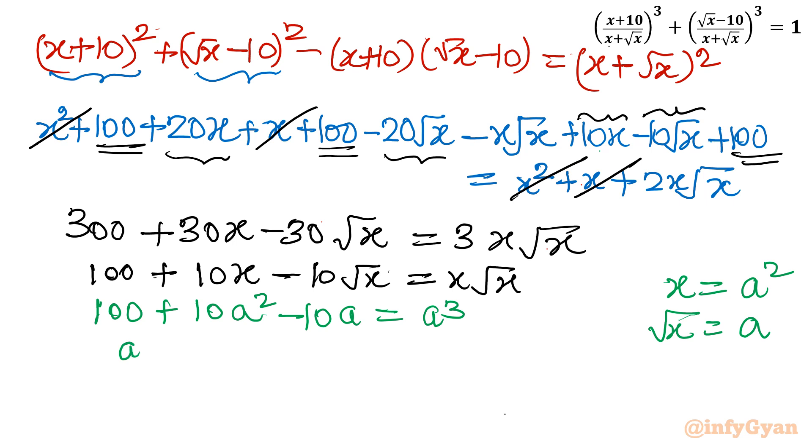Take all the terms to right hand side, put one side 0. So a³ - 10a² + 10a - 100 = 0.